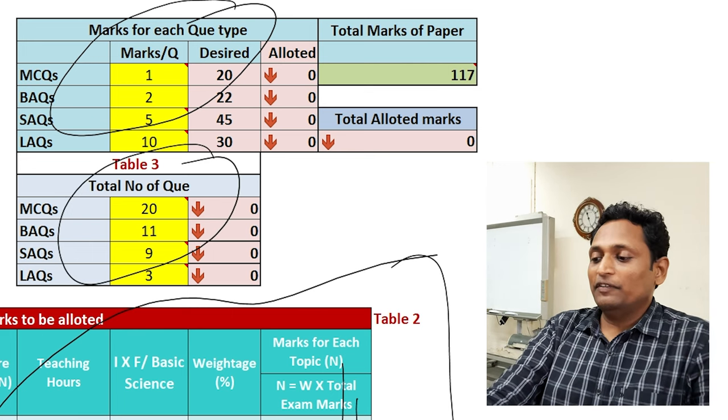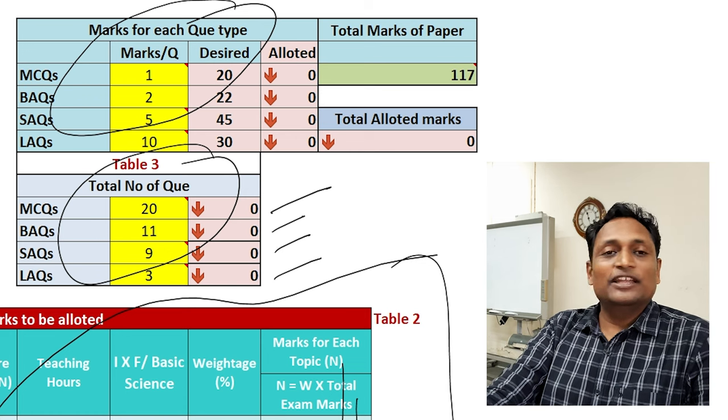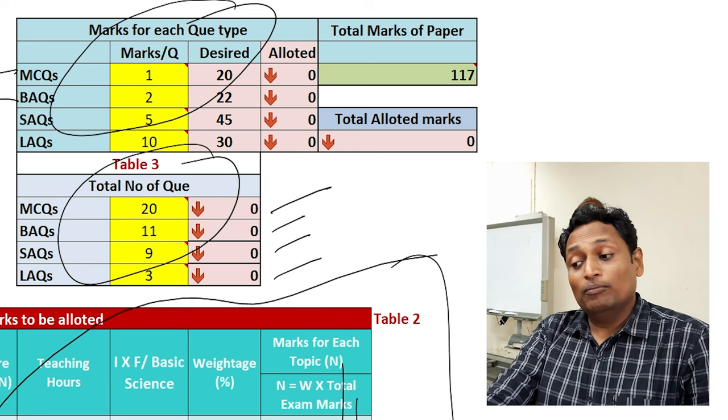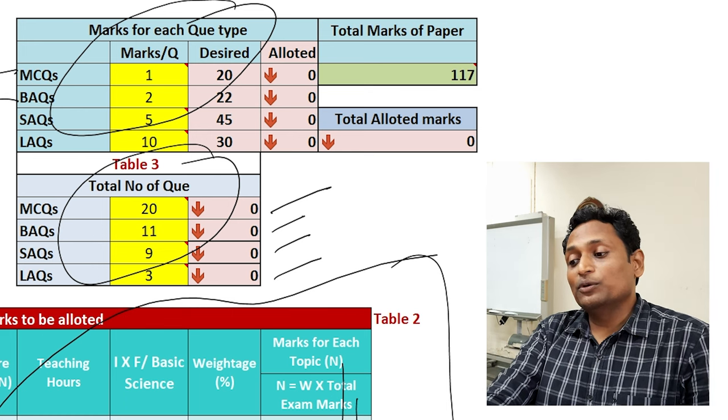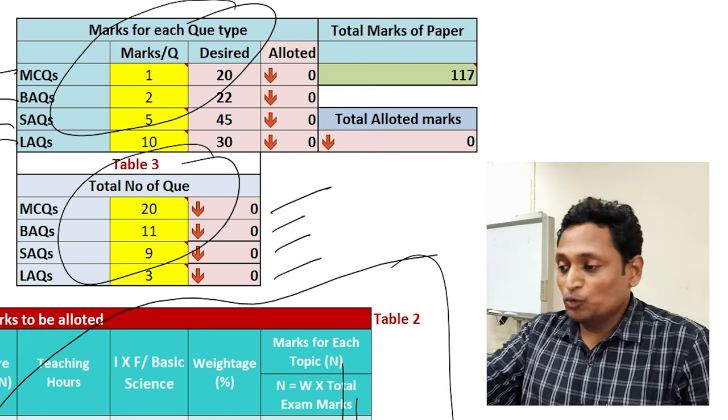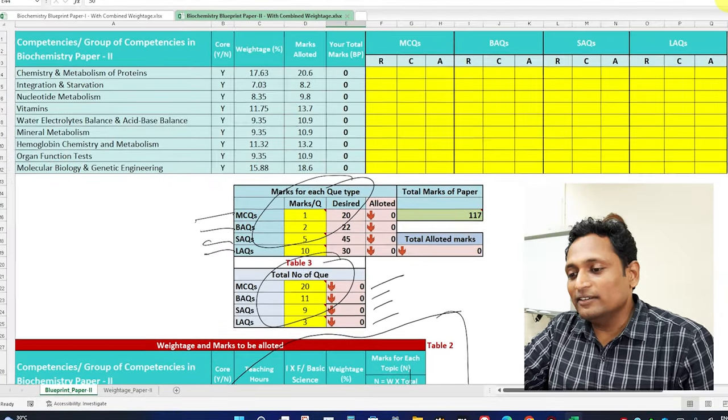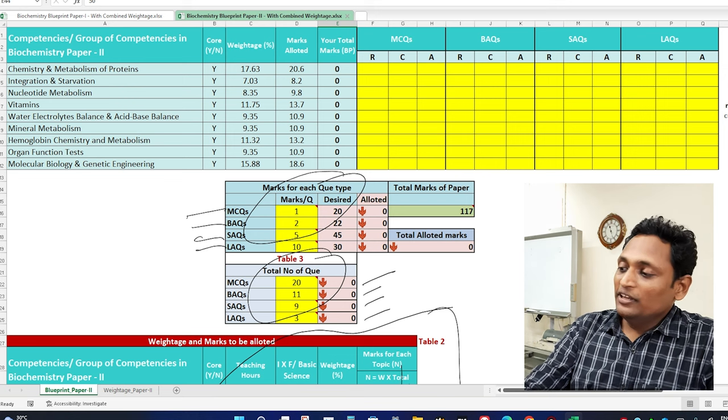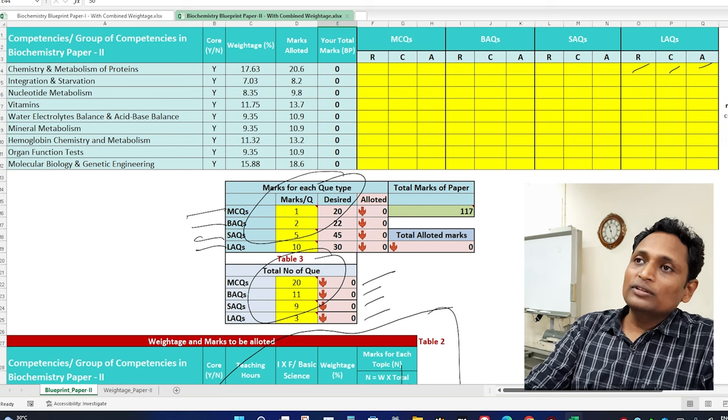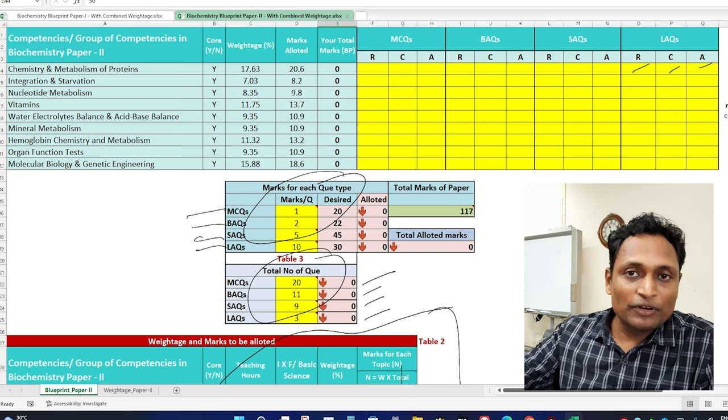Then come to table number 3, that is marks per each question type and total number of questions. Here you will see that 20, 11 BAQs then 9 SAQs and 3 LAQs are to be set. Here 1 MCQ, 1 mark per MCQ then 2 mark per BAQ, 5 per SAQ and 10 per LAQ has to be entered here. And come to table number 4 here, you will see that the complete blueprint is empty. These are the places where you need to put the values depending on the LAQ or SAQ or whatever type of question you want to set for the given question paper.